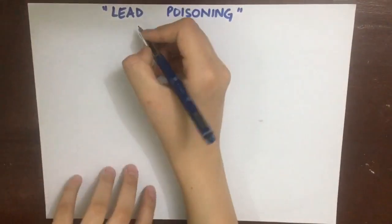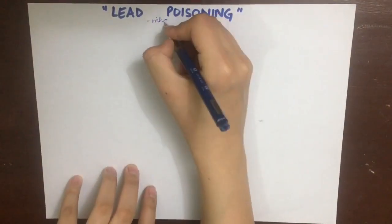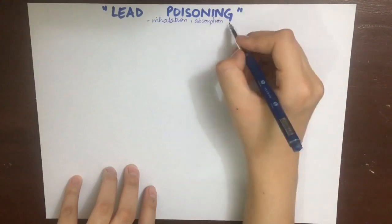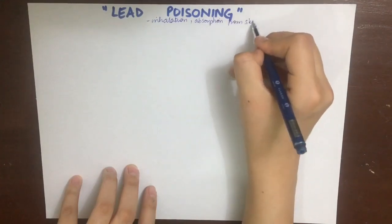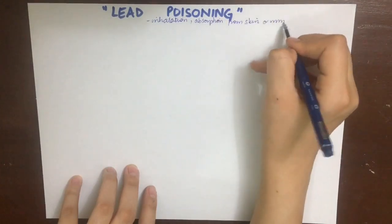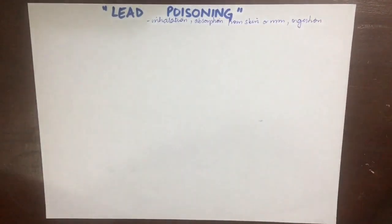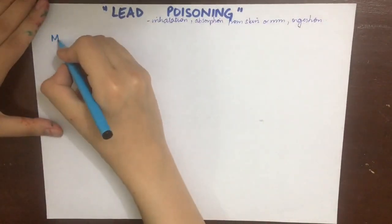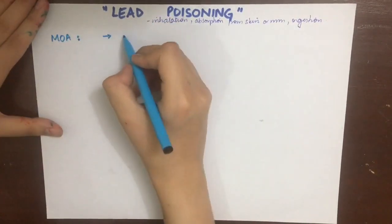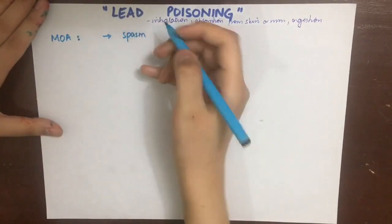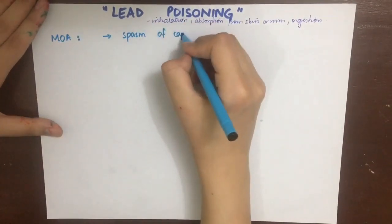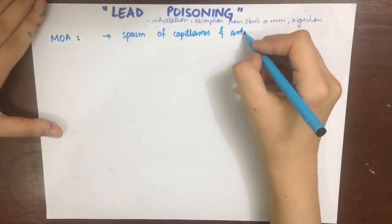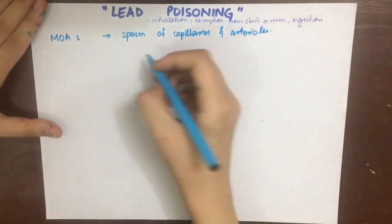Lead poisoning occurs via inhalation, absorption from the skin or mucous membrane, and ingestion. The mechanism of action of lead is that it causes spasm of capillaries and arterioles and also gets deposited in the brain.